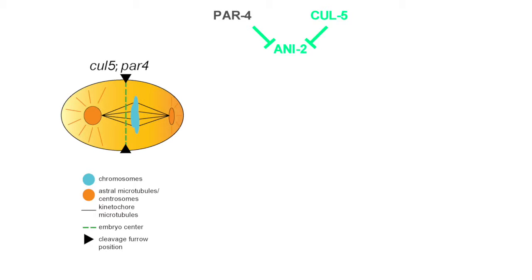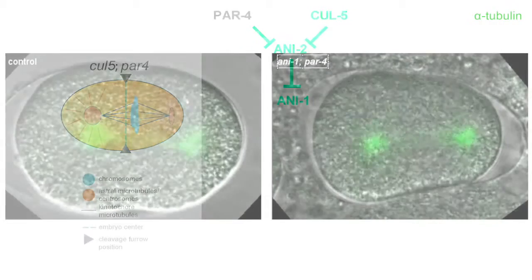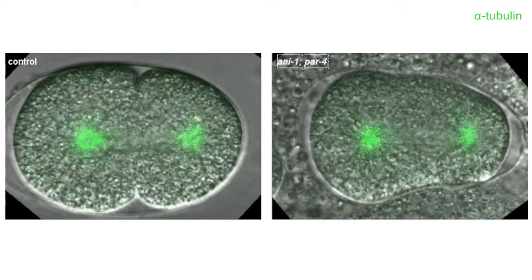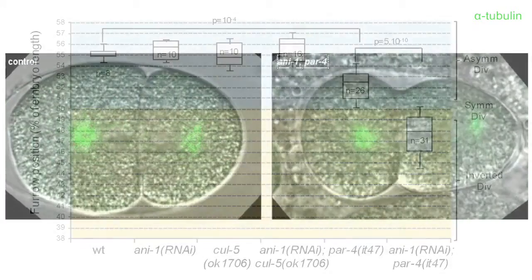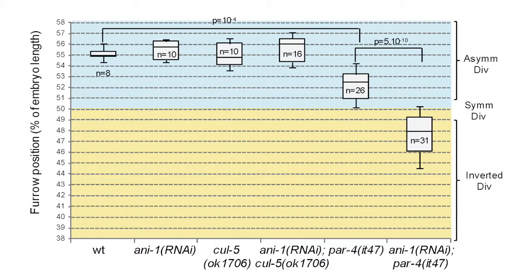Anilin 2 in turn inhibits a larger member of the anilin family called anilin 1. The cleavage furrow was strongly shifted towards the anterior of embryos lacking anilin 1 and PAR4, but embryos lacking anilin 1 and CUL5 position their furrows correctly, indicating that an anilin independent pathway must also function downstream of PAR4.